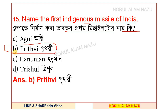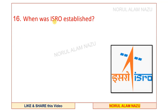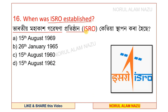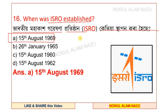Question 16: when was ISRO established? ISRO stands for the Indian Space Research Organization. It was established on 15th August 1969.